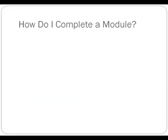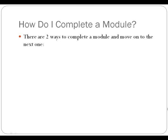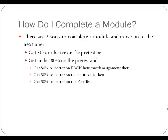So how do you pass a module? There are two ways. The first way is if you get an 80% or better on the pretest, you move on to the next pretest. The second way is if you don't get an 80% on the pretest — and we don't expect you to, as the name says, it's a pretest — your custom-made homework will unlock, and you have to get 80% or better on each homework assignment. Then you take the quiz and get 80%, and then you have to get 80% or better on the post-test.